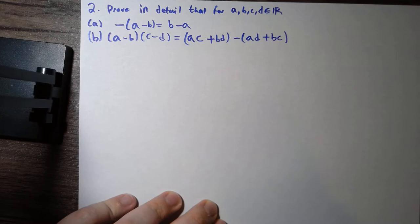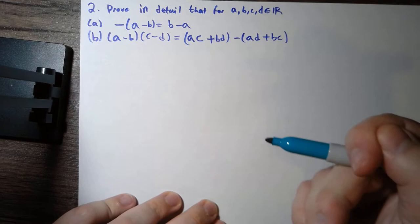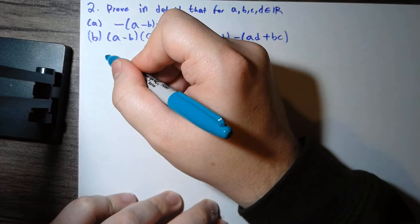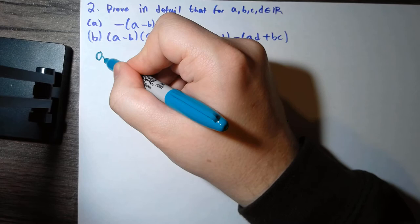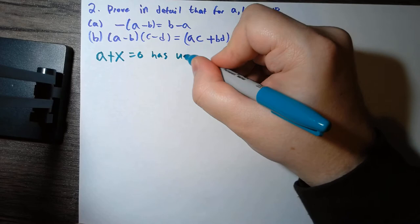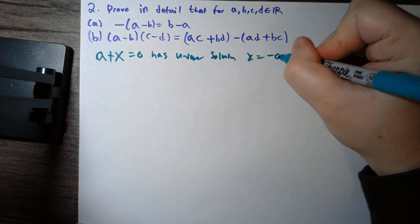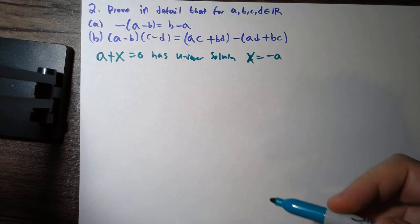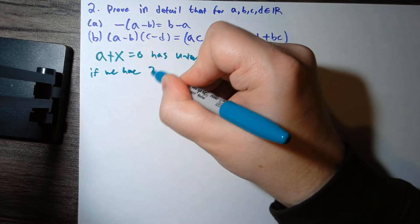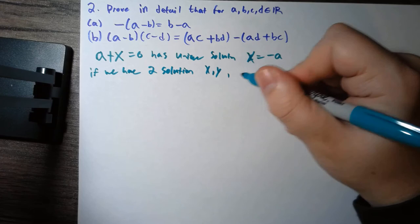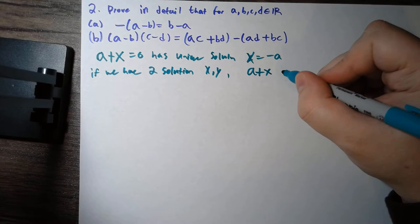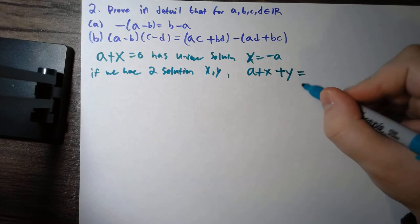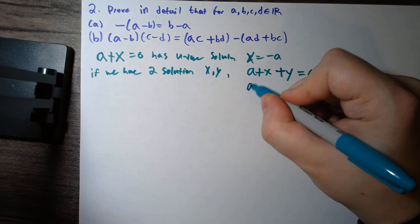First we might want to prove a lemma that negatives are unique. That is, the equation a plus x equals zero has a unique solution, x equals negative a. The way we do this is assume that we have two solutions. So if we have two solutions, say x and y, then we ask: what is a plus x plus y? Using the fact that a plus x is zero, we have this is zero plus y, and since zero is the additive identity, this is y.